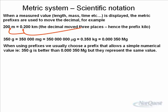When using prefixes, we usually choose a prefix that allows a simple numerical value. So you see the two examples there. 350 grams is better than 0.000350 megagrams. They're the same value, but one is much easier to understand.